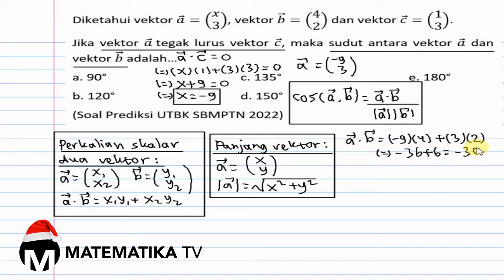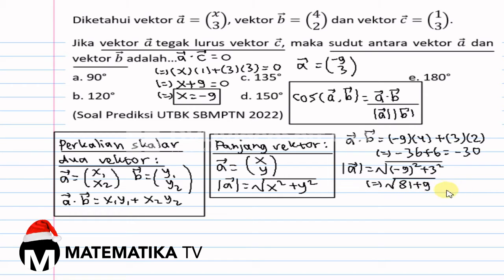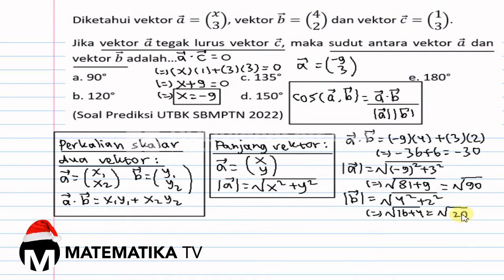Panjang Vektor A sama dengan akar (min 9) pangkat 2 plus 3 pangkat 2 sama dengan akar 81 plus 9 sama dengan akar 90. Panjang Vektor B sama dengan akar 4 pangkat 2 plus 2 pangkat 2 sama dengan akar 16 plus 4 sama dengan akar 20. Panjang Vektor A kali panjang Vektor B sama dengan akar 90 kali akar 20 sama dengan akar 1800 sama dengan akar 900 kali 2 sama dengan 30 akar 2.